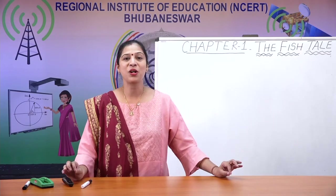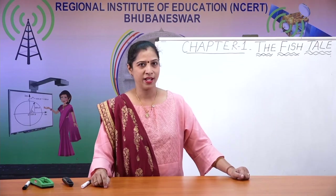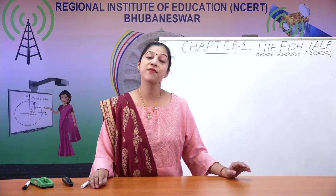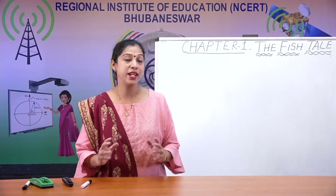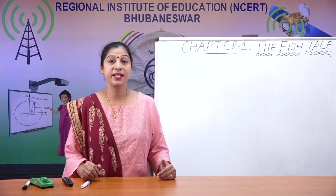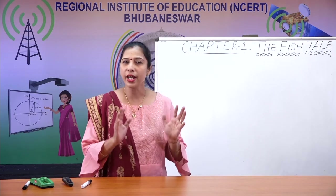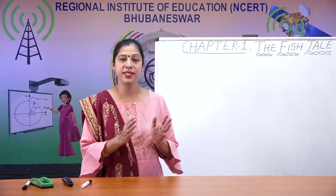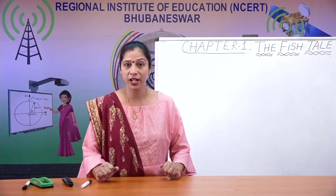When we talk about these tails, fish like kingfish or rohu have a vertical tail that moves from side to side. Whereas the whale shark's tail is horizontal and moves up and down. Now, the whale shark is actually not a fish — it is a mammal. Its tail is quite different from the ones of regular fish.